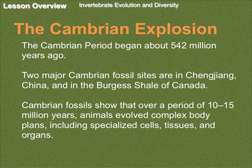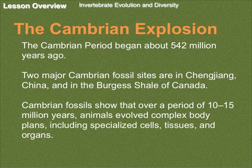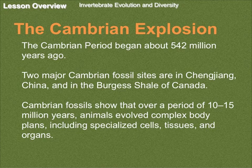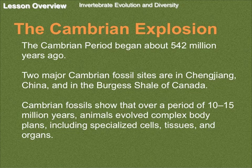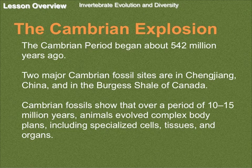The Cambrian Explosion. The Cambrian period began about 542 million years ago. The two major Cambrian fossil sites are in Chengjiang, China, and in the Burgess Shale of Canada — shale is a type of rock. Cambrian fossils show that over a period of 10 to 15 million years, animals evolved complex body plans, including specialized cells, tissues, and organs. Again, remember, these are theories.